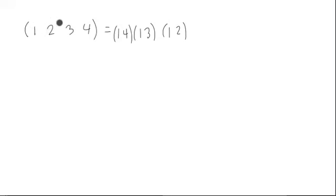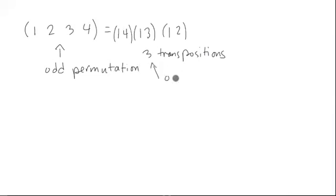Notice this is a cycle of length 4, and it's made up of three transpositions, where a transposition is the same as a two cycle.